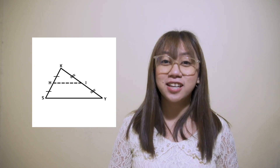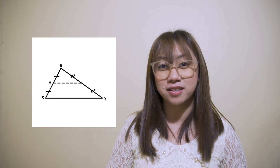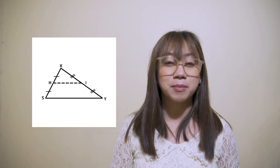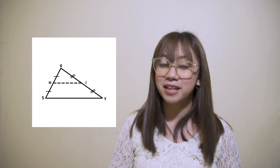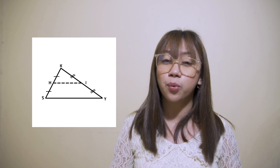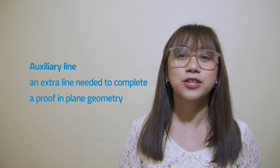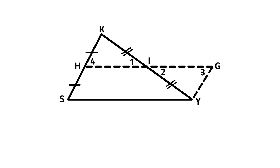Now let's go back to the given: triangle SKY with H and I as the midpoints of SK and KY respectively. Let's prove that segment HI is parallel to segment SY, and segment HI is one half of segment SY. For this proof, we will utilize an auxiliary line — an extra line needed to complete the proof in plane geometry. Applying the midline theorem, we can extend HI to point G such that IG is congruent to HI. This will show us that HI is parallel to SY and HI is equal to one half of SY.